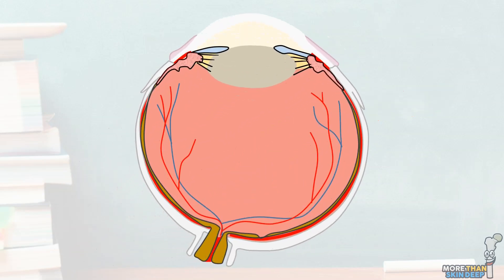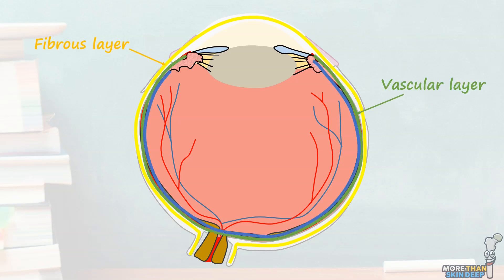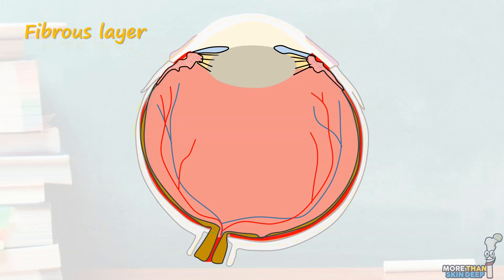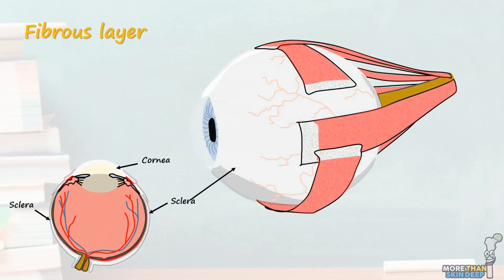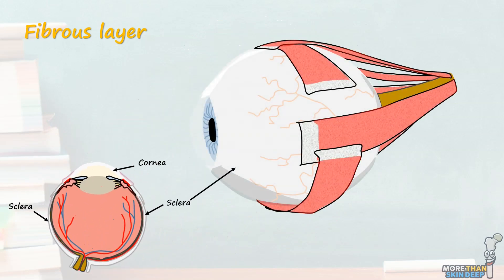Now we will look at a cross-section of the eye to appreciate its layers. There are three main layers of the eye: the fibrous layer, the vascular layer, and the nervous layer. The fibrous layer is the outermost layer and consists of the sclera and the cornea. The sclera is an opaque, white structure which is very fibrous. It is derived from mesenchyme.